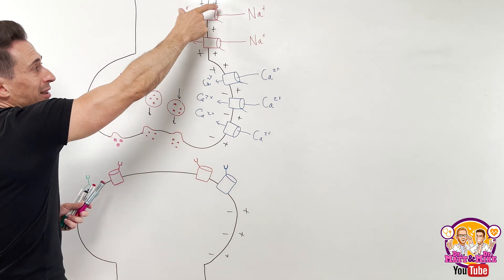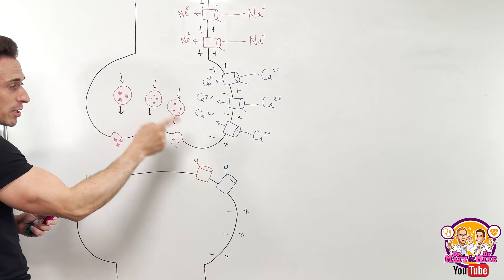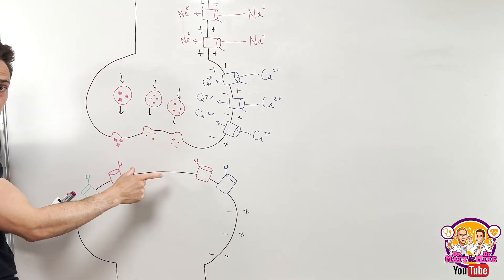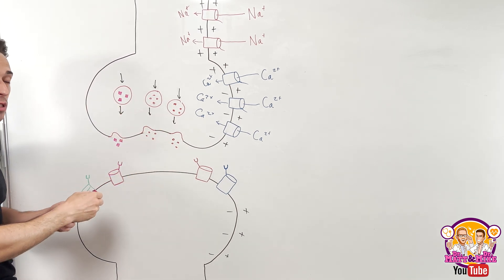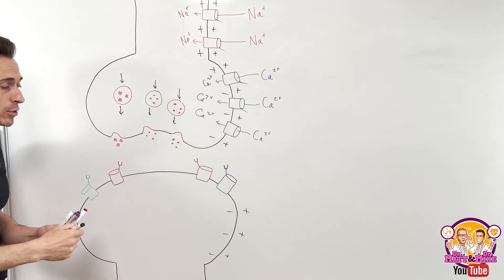So we went from an electrical chemical signal because of the charging chemicals to simply just a chemical signal. And this chemical signal needs to diffuse across this synaptic cleft. That's what it's called.